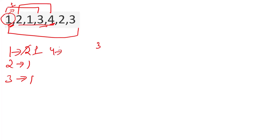Then we add the new element entering the window — say 4 — with a value of 1 since we've seen it for the first time. Now the hashmap has keys 1, 2, 3, 4, so the size is 4 — meaning 4 distinct elements in the second window.